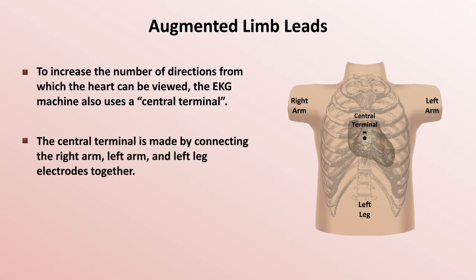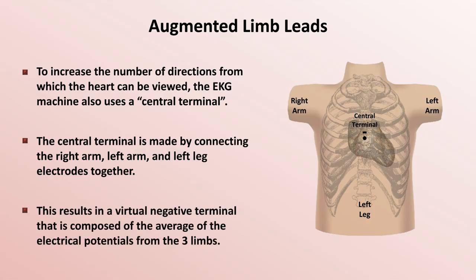As mentioned before, the central terminal is made by connecting the right arm, left arm, and left leg electrodes together. This results in a virtual negative terminal that is composed of the average of the electrical potentials from the 3 limbs.